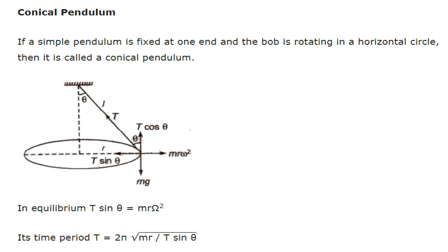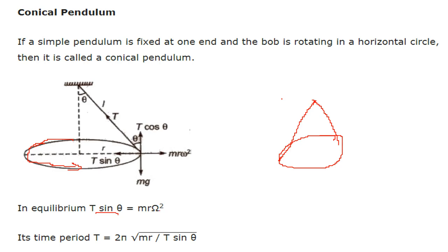Conical pendulum: here a simple pendulum is fixed at one end and the bob rotates in a horizontal circle, eventually making a cone. In equilibrium, T·sinθ = mrω² and T·cosθ = mg. The time period is given by 2π√(mr / T·sinθ), where T (tension) has components T·cosθ and T·sinθ, mr·ω² is the centripetal term, and mg is the gravitational term.